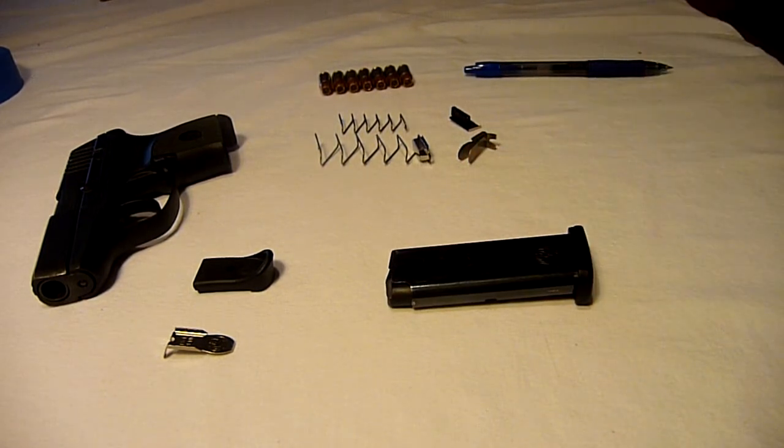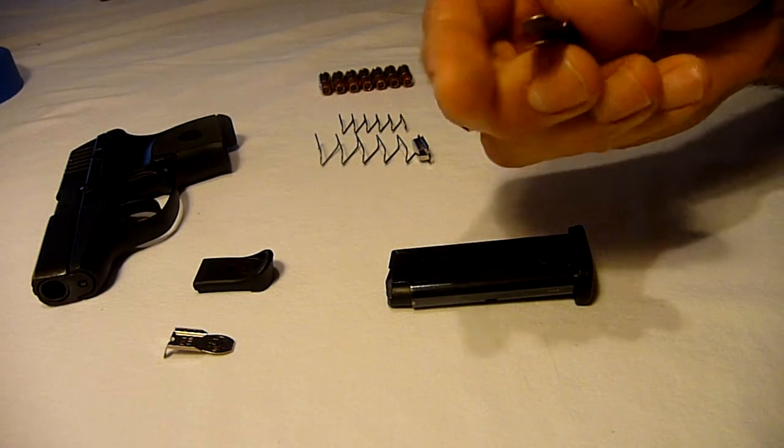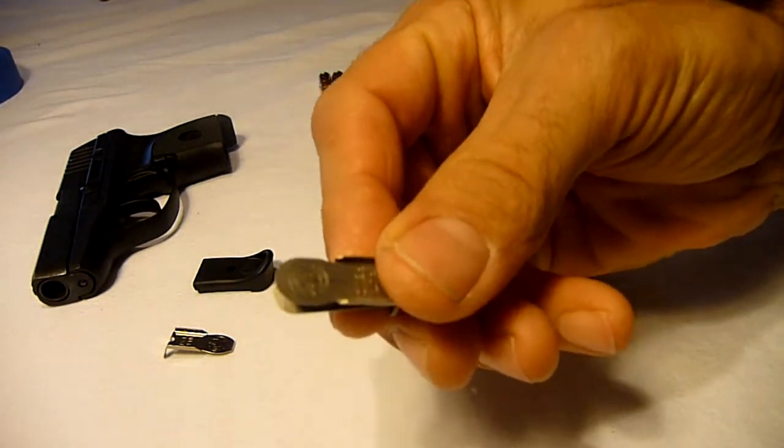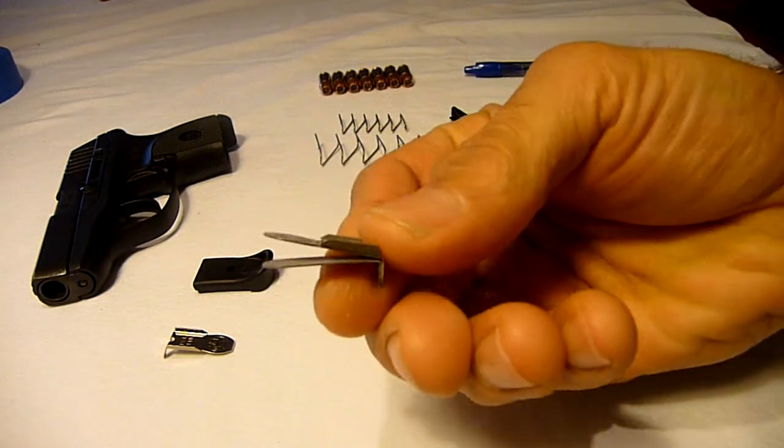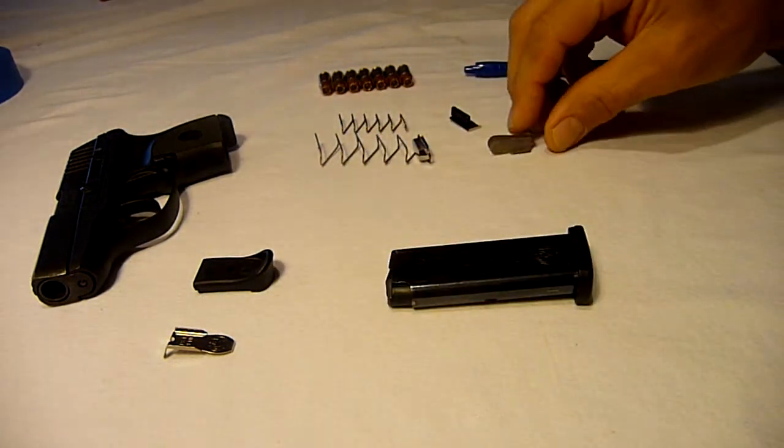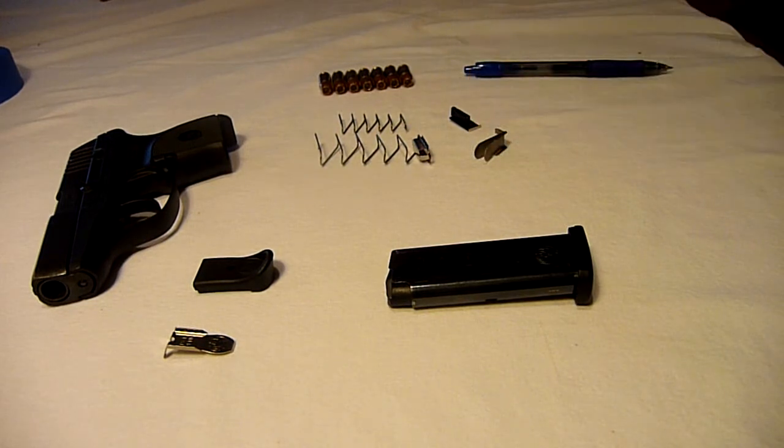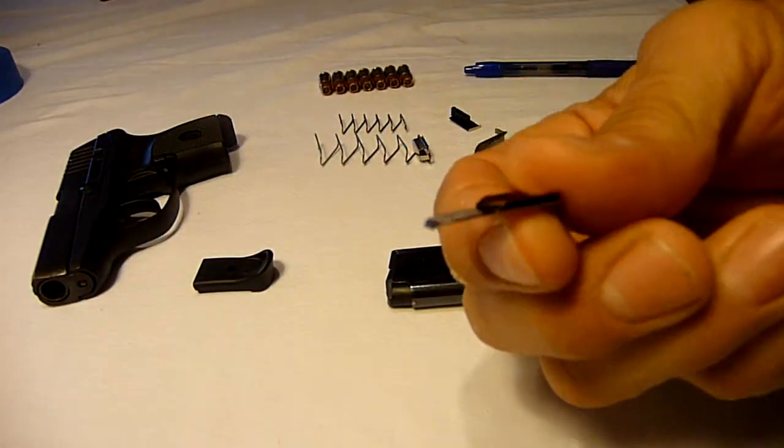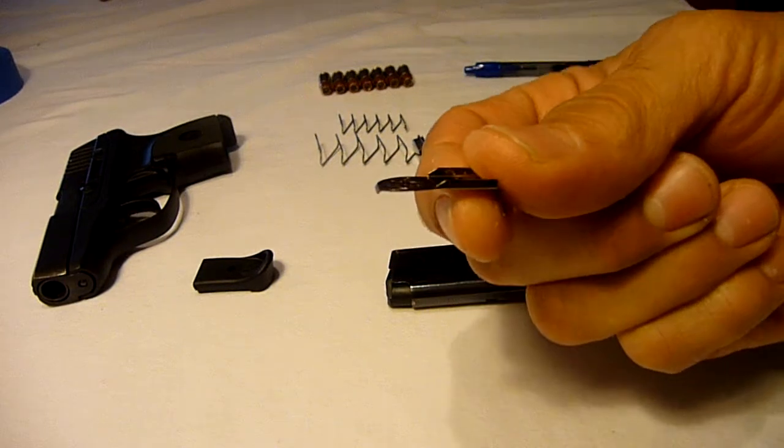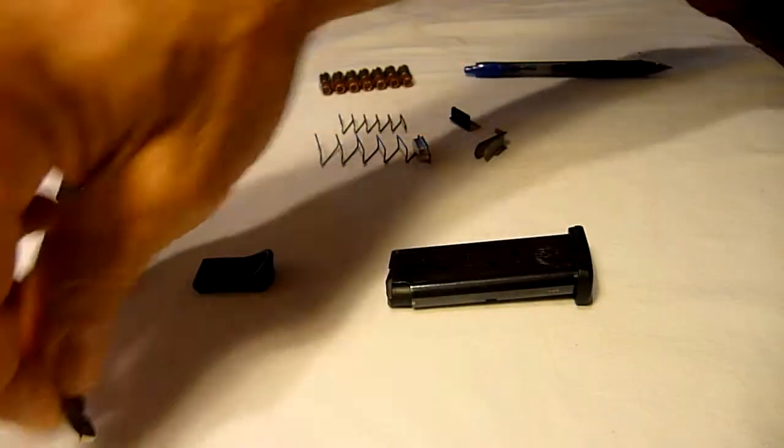This video is for the Ruger LCP and the Kel-Tec P3AT conversions using the split followers. This is what the split follower looks like. If you're using the original flat follower refer to a different video for instruction. It goes together differently.